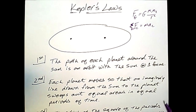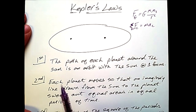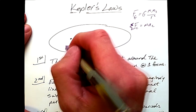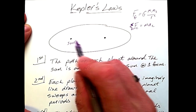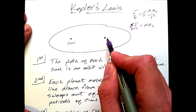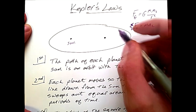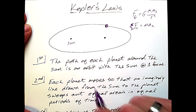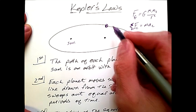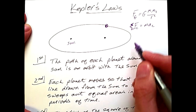The centripetal force equals m times a_c. The first law is that the path of each planet around the sun is an orbit with the sun at one focus. Here we see the sun at one focus, and then a second foci out here generating the ellipse. The orbiting planet would be somewhere out here — this is your planetary body orbiting in an elliptical shape.